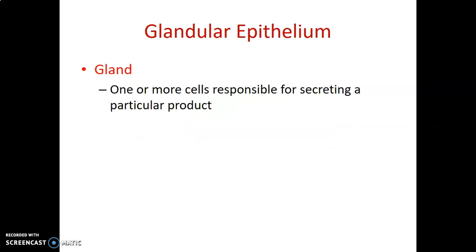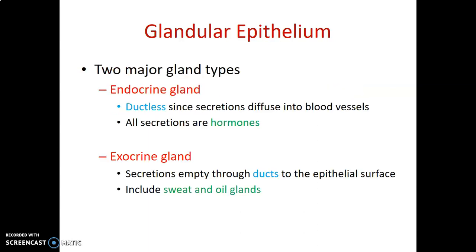All those we were discussing were lining epithelium. Now we go to glandular epithelium. What is a gland? A gland is a collection of cells — it could be one cell or more — that secrete a particular product. In most cases it is usually a hormone, but it could also be other secretions from exocrine glands.